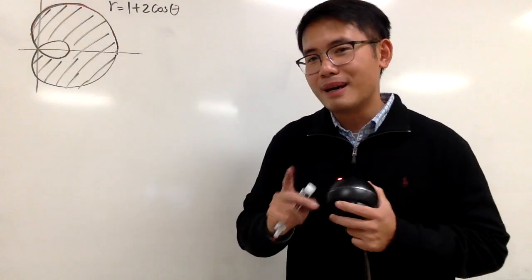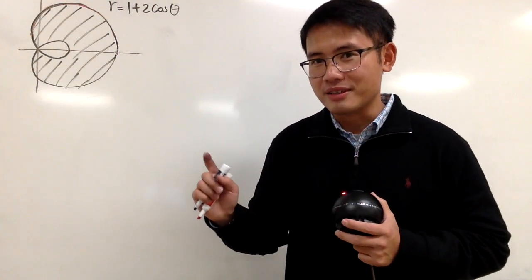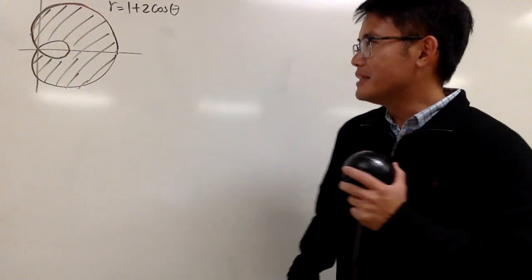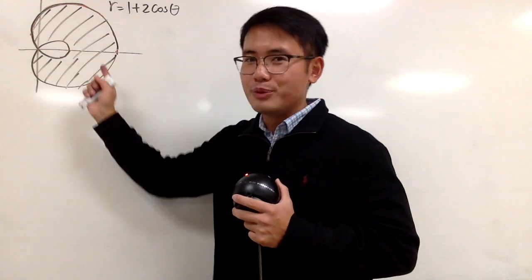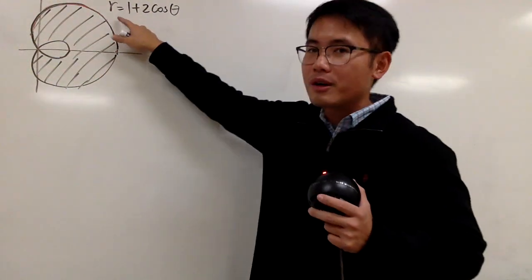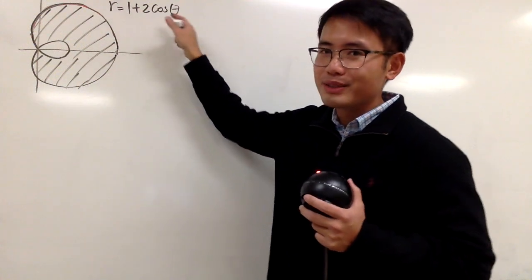Okay, my picture is not the best, but you guys can see a nicer picture on the thumbnail. Anyway, in this video we are going to find the area of the shaded region, and here we are talking about a polar curve, r equals 1 plus 2 cosine theta.